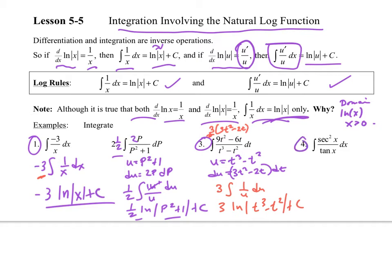And then number 4. Do you see a function and its derivative? I hope you do. So this is u is equal to the tangent of x. du is equal to the secant squared of x dx. So now, I hope you can kind of get the hang of this, but this is just going to be ln of what is my u? Well, it's the tangent plus c. There's your answer.